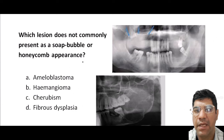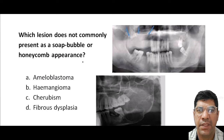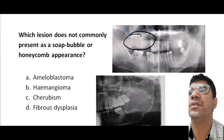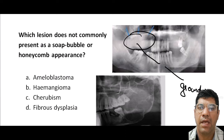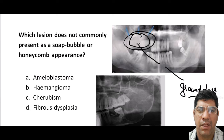Which lesion does not commonly present with a soap bubble or honeycomb appearance? The answer is fibrous dysplasia. Fibrous dysplasia presents with a ground glass appearance — a hazy, poorly defined, and somewhat granular pattern on the radiograph — and does not resemble the soap bubble or honeycomb appearance.